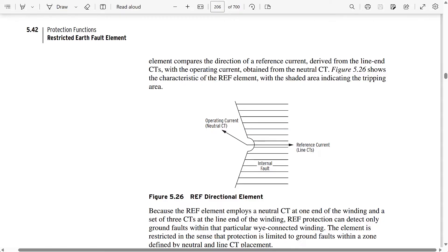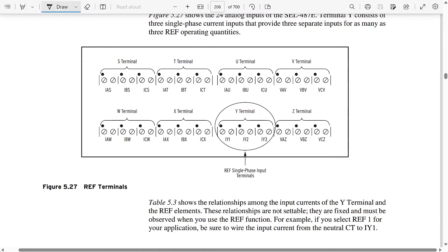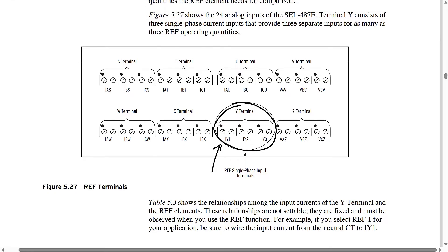Also notice that the SEL487E has dedicated single-phase CT inputs for the REF function. For this example, we're going to be using the IY1 input. These three inputs are dedicated single-phase inputs for the REF function. Unlike the phase differential elements, for this REF element the default settings in the SEL487E are often just fine. We don't need to do any extra calculations like we do for the phase differential element. All the relay needs to know in general is the CT ratios for all the CTs, including the neutral and the line side three-phase CTs, and then we can use the default settings for the REF element.